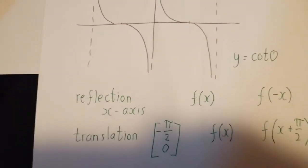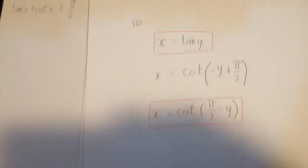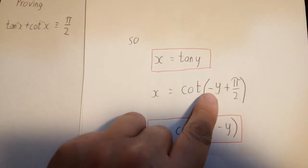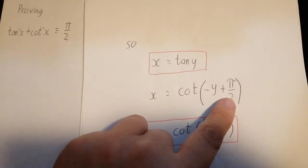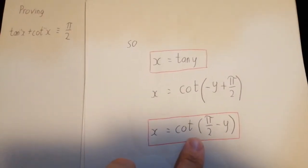And the reason that is handy is that when you come to a later point in the proof, you can replace the tan y with the reflection of cot and the translation of cot with that tidied up.